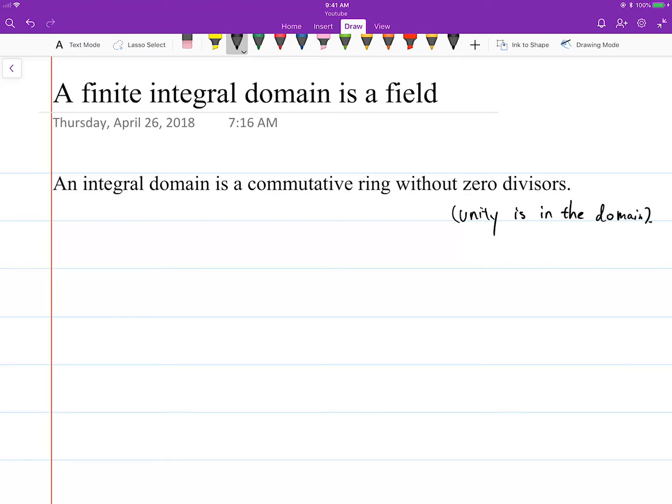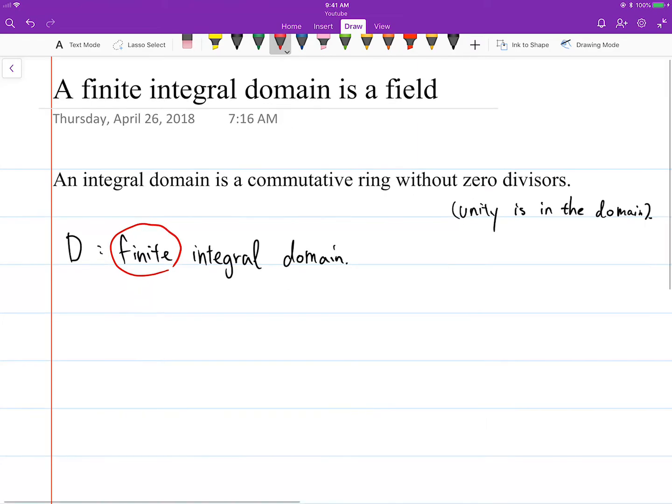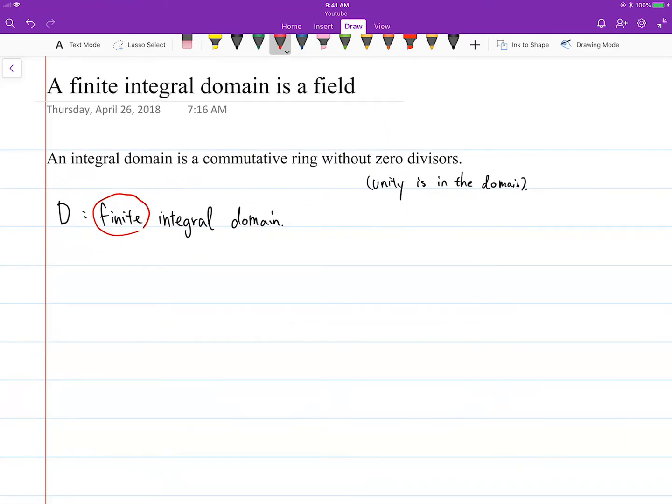Okay, so for the proof, let's say D is a finite integral domain. Obviously not all integral domains are fields—they're not the same thing. But here the key word is finite. So if you have a finite integral domain, that's a field.